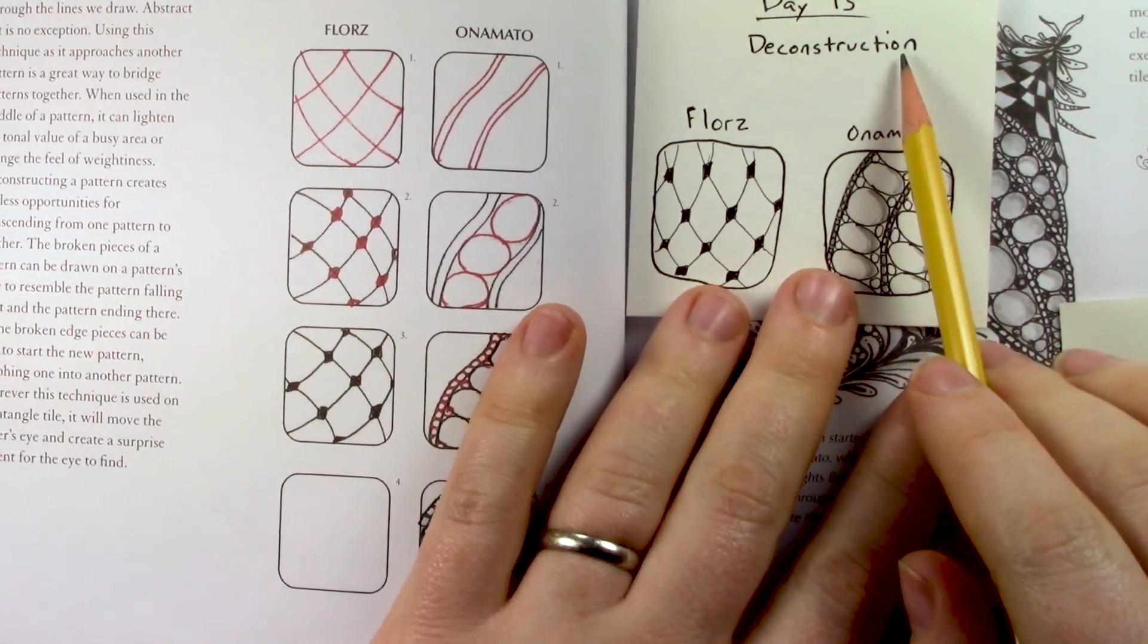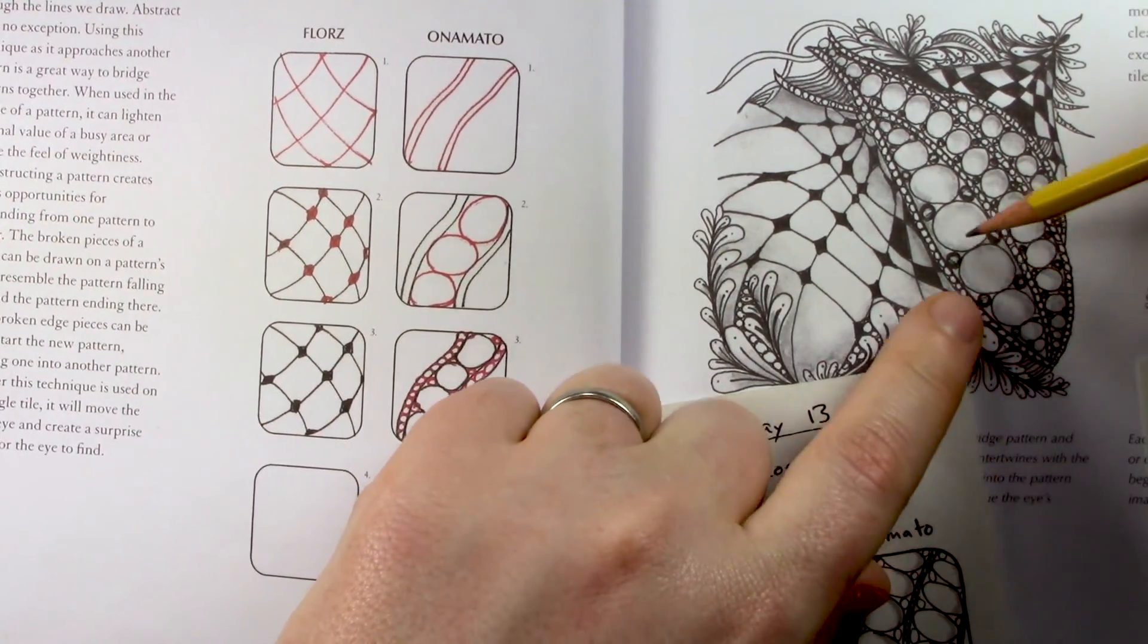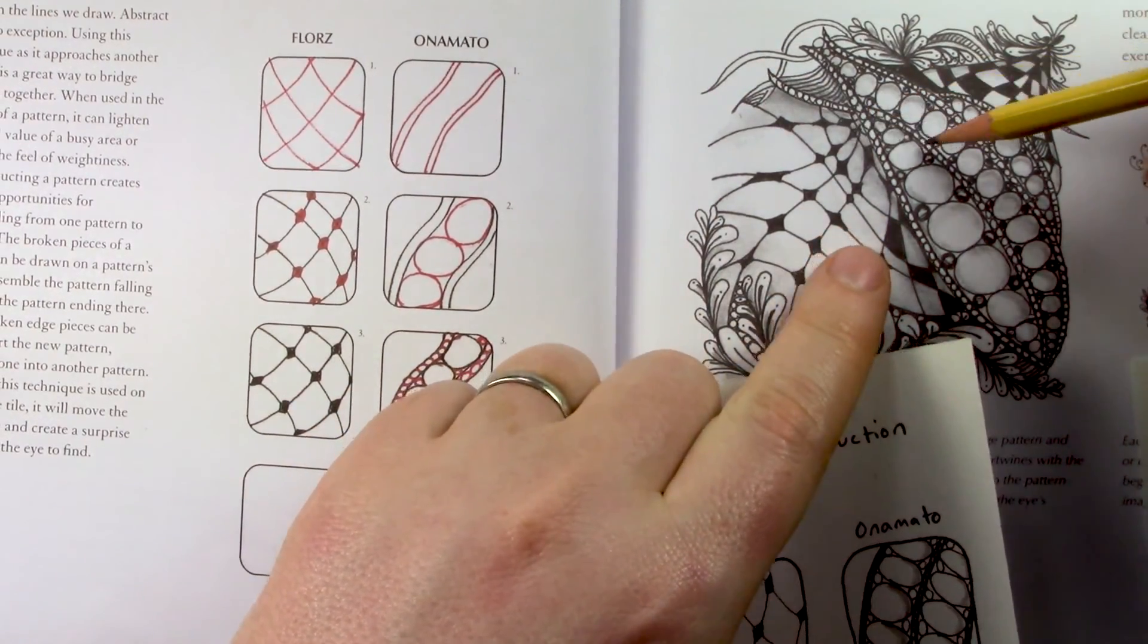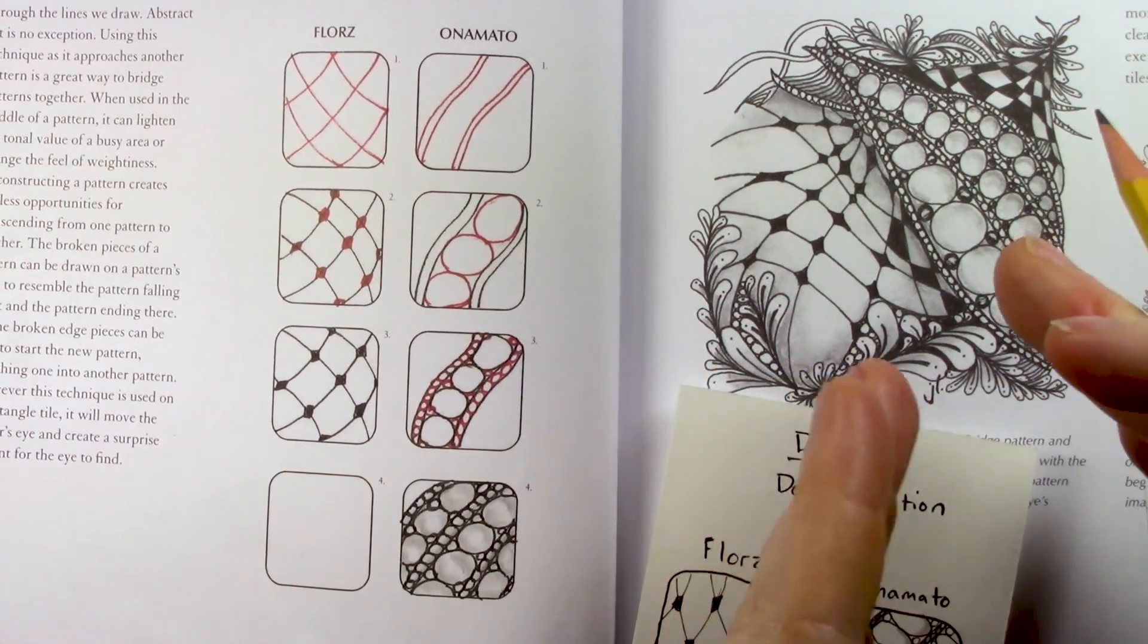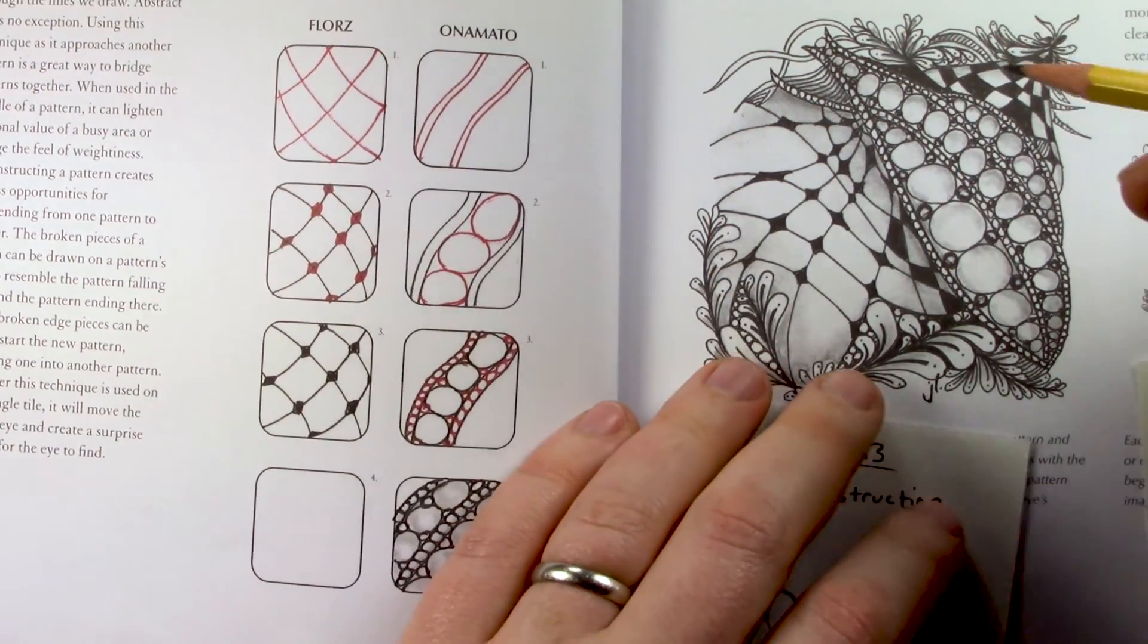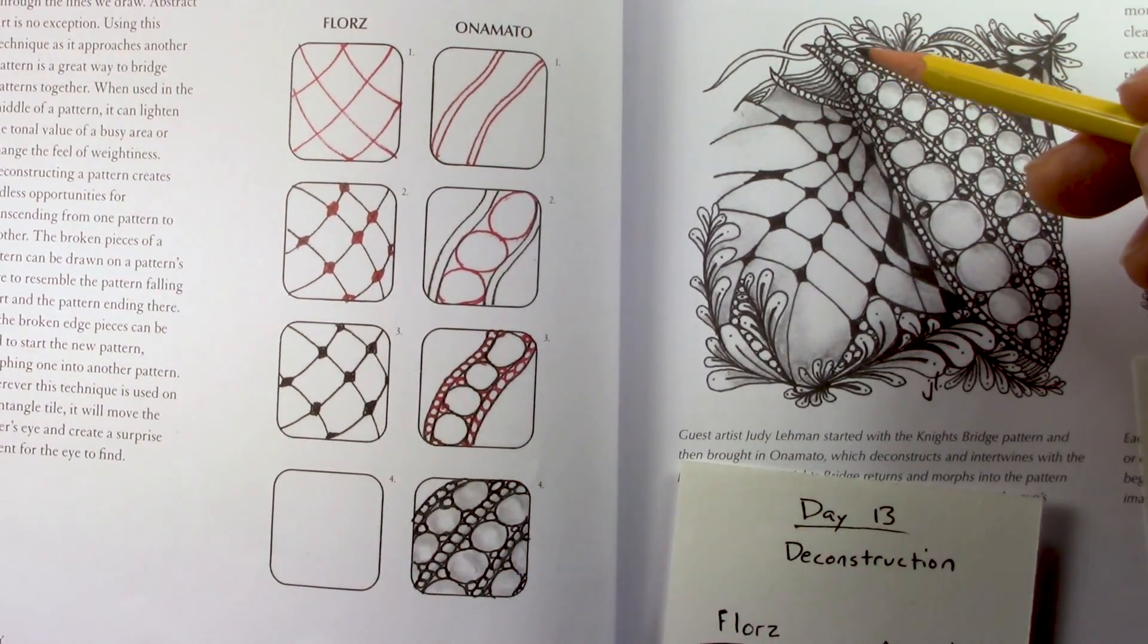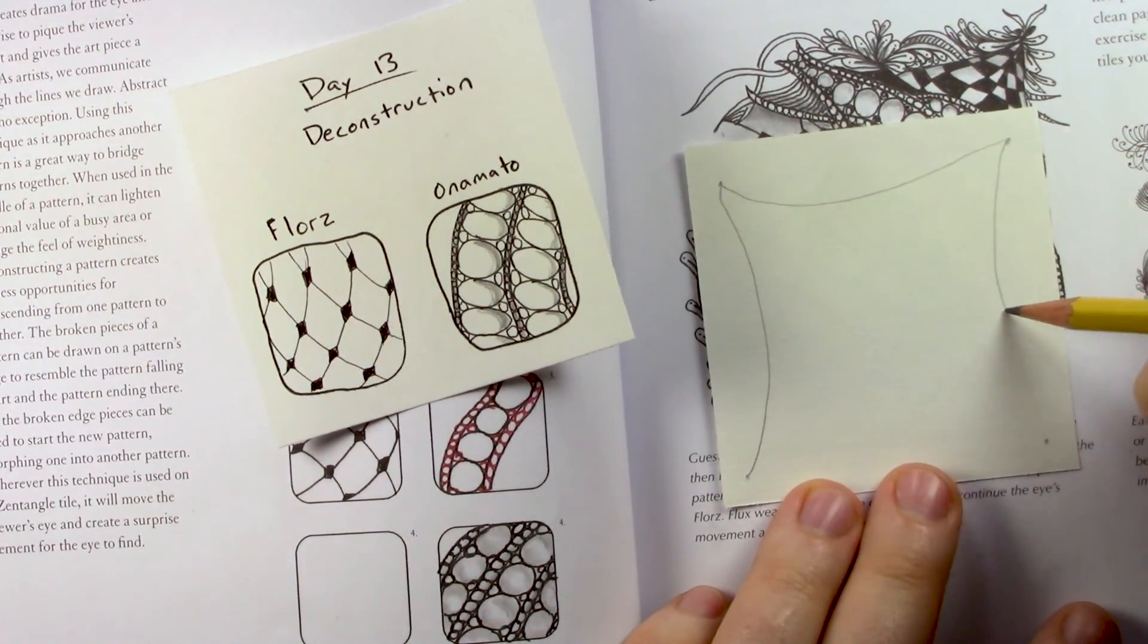And now we need to talk about deconstruction. If we take a look at this Zentangle here, notice that at the end of this Onomato pattern here, instead of those little ribbon things coming together, they split apart at the end. This one even overlaps underneath and goes out the other side. It kind of gives the feeling that as this Onomato pattern goes up that way, it kind of splits apart. It deconstructs. It comes apart. Also, you can see more of these little ribbony tendrils coming out. And there's lots of fun things you can do with that to make your patterns look like they're kind of falling apart. So I'm going to go ahead and make a border and string and start myself a Zentangle here.